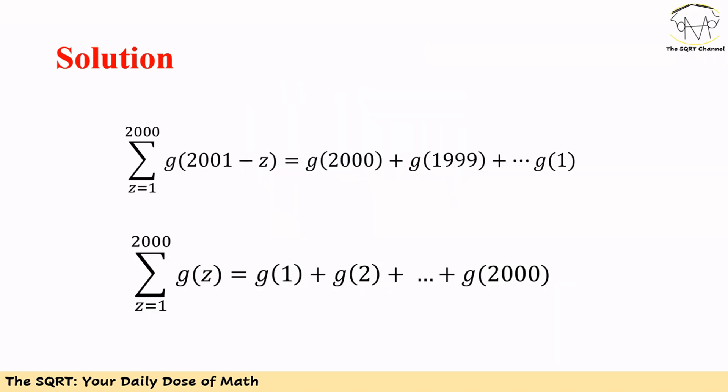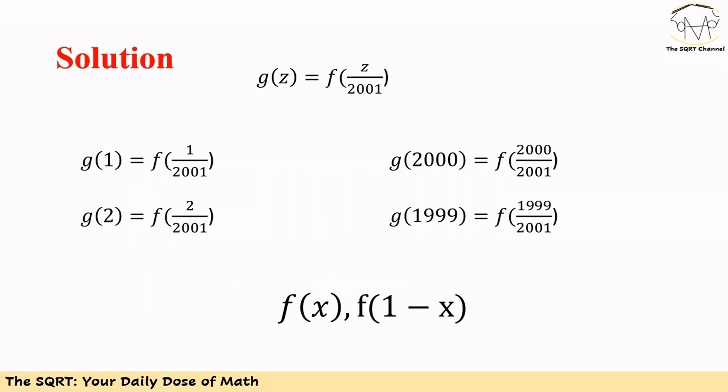Now let's reveal a property that this expression has. Instead of calculating Sigma g of z, we are going to calculate Sigma g of 2001 minus z. Note that these two expressions are going to be equal, which means that the expression we want to calculate has a symmetry, and we are going to benefit from it.